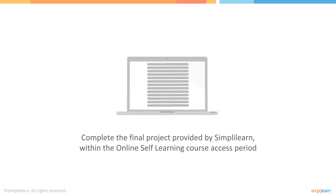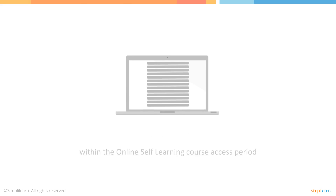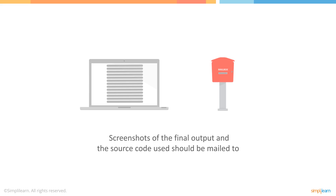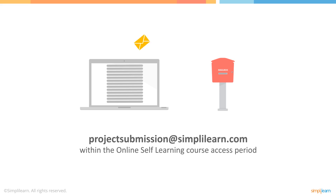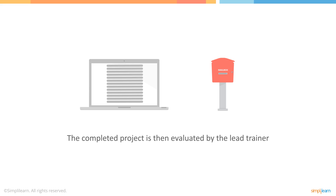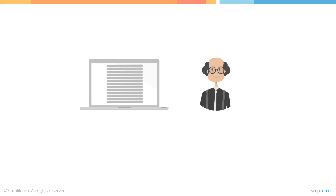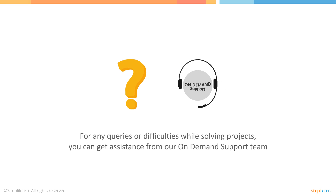Complete the final project provided by Simply Learn within the online self-learning course access period. Screenshots of the final output and the source code used should be mailed to the project submission application at simplylearn.com within the online self-learning course access period. The completed project will be evaluated by the lead trainer. For any queries or difficulties while solving projects, you can get assistance from our on-demand support team.